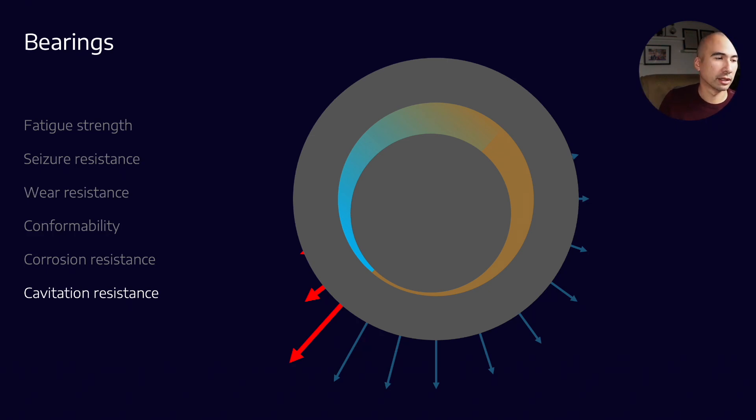One last one which I didn't realize was an actual word is something called embeddability. This goes back to our initial idea that we want to preserve the crankshaft wherever possible because it is the far more expensive and more important component. What we mean by this is, let's say for example we have a contaminant and it gets forced into this narrow gap. The lubricant film—remember the ID is the crankshaft. So what we want is for that contaminant—it can't go anywhere, so where's it going to go?